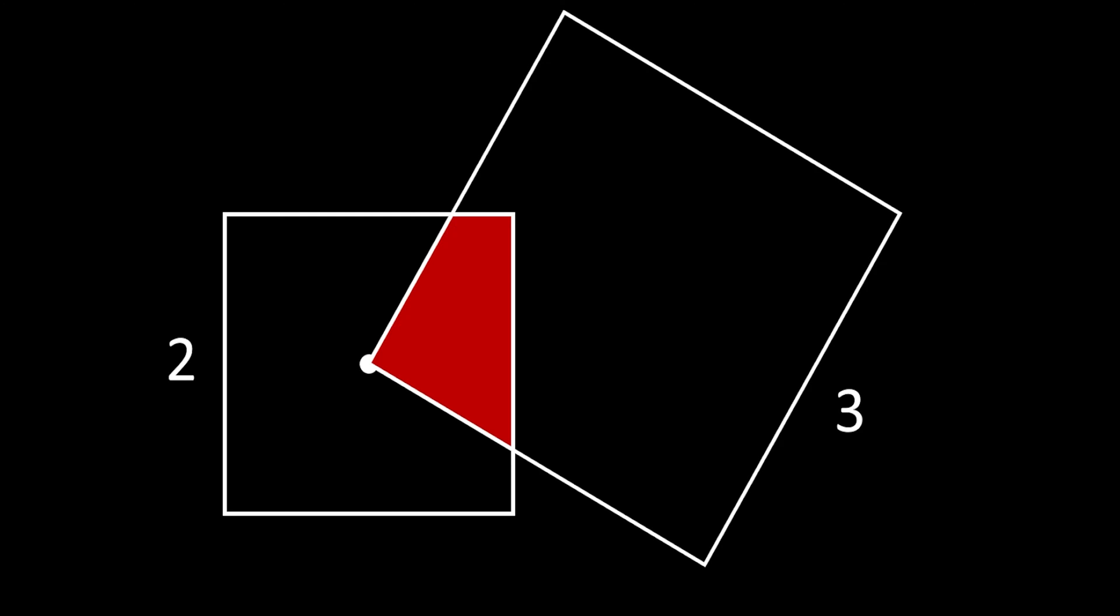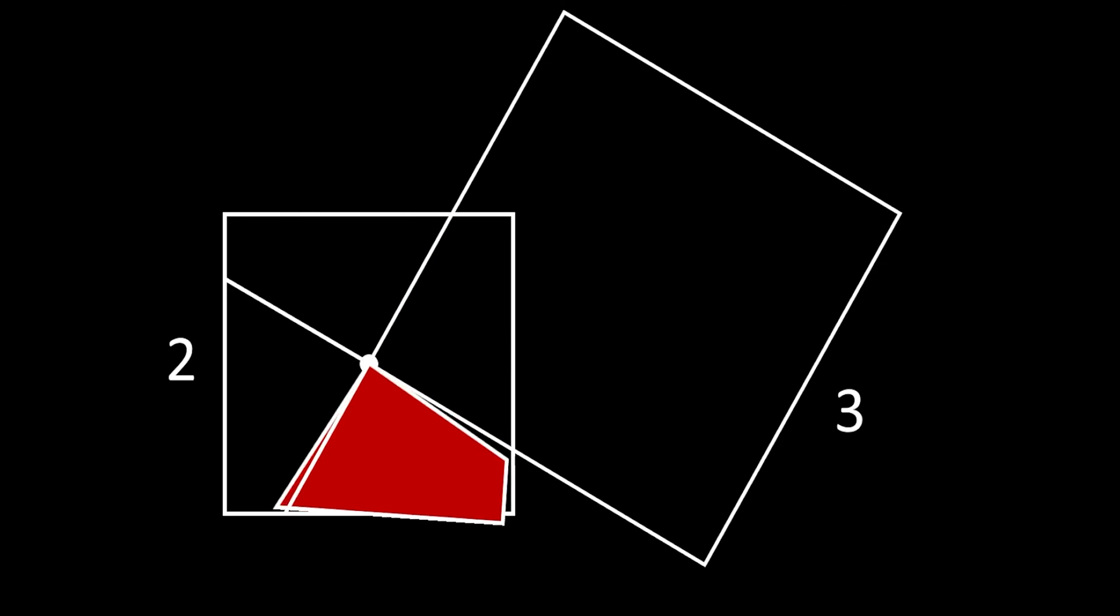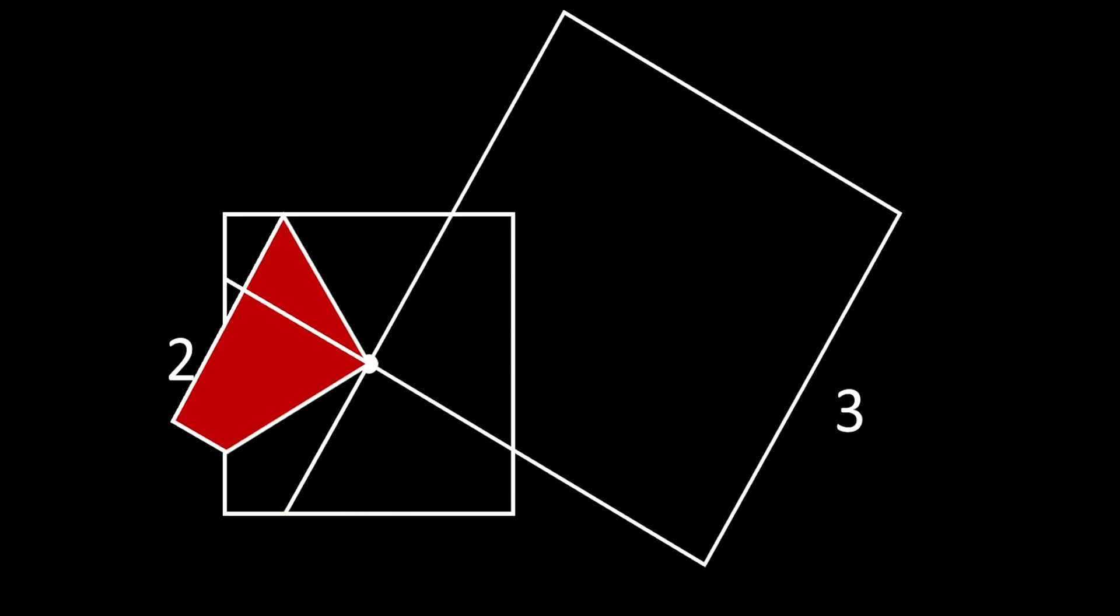Although it seems like a quite challenging task, all that you need to know in order to solve this problem is the principle of rotational symmetry. First, we will extend the sides of the big square until they touch the side of the smaller square. This way we divided our smaller square into 4 separate areas. And if you can notice, these four areas are completely identical to each other.